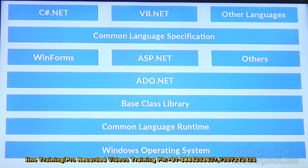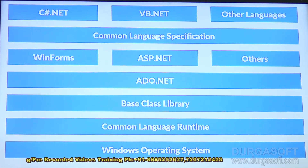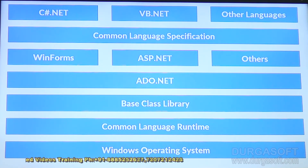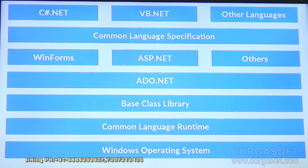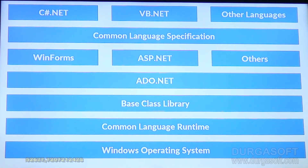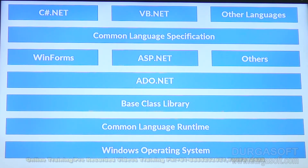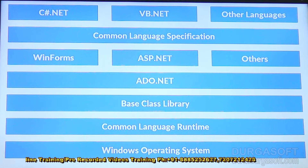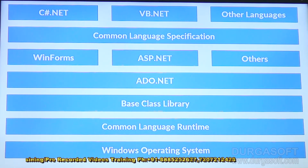This is a .NET Framework architecture. .NET is also called a framework. Framework means integration or collection of multiple languages. .NET is not a single language — it is a collection of multiple languages. .NET includes C# .NET, VB .NET, ASP .NET. Because it is a collection of multiple languages, .NET is called a framework.